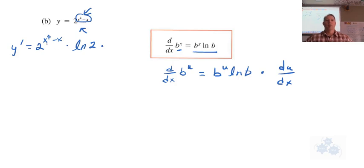So what's the derivative of x to the 4 minus x? 4x cubed minus 1. 4x cubed minus 1 is correct.